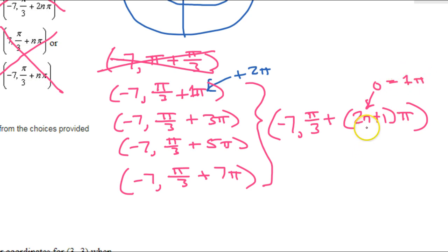What if n is 1? Then that's 2 times 1, which is 2, plus 1, which is 3. So, that would give you 3 pi.